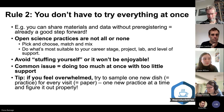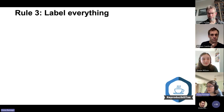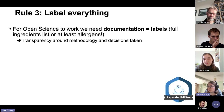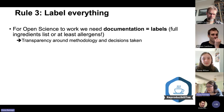The final rule of a buffet and of open science is to label everything. For open science to work, we need to be transparent and document everything. In the case of a buffet, this could mean publishing a full ingredients list, or at least the key allergens present in a dish.